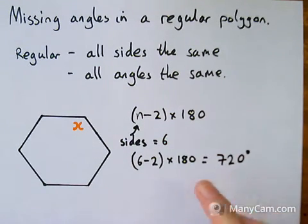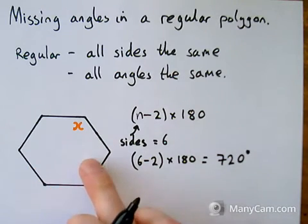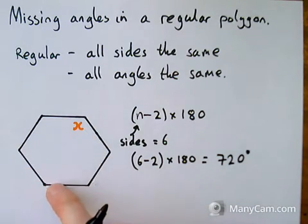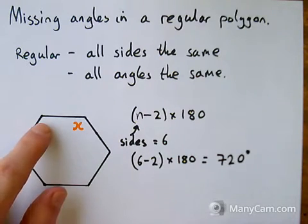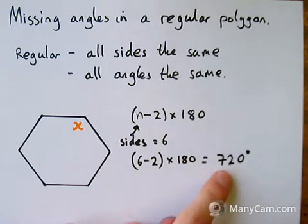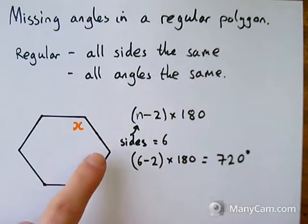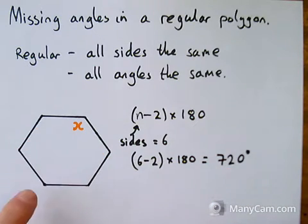So this has told me the total amount of angles that are in this shape is 720 degrees altogether. If each of these angles are identical, that means I can divide my total amount and I can share it equally between 6 angles.